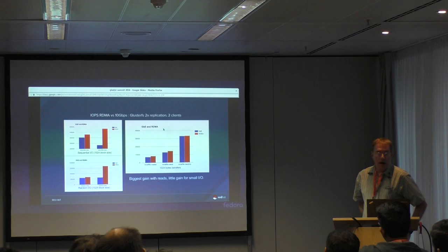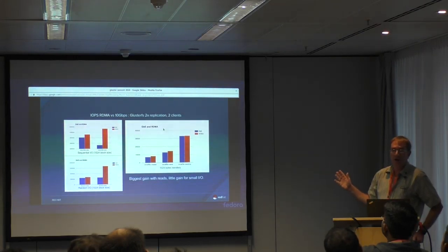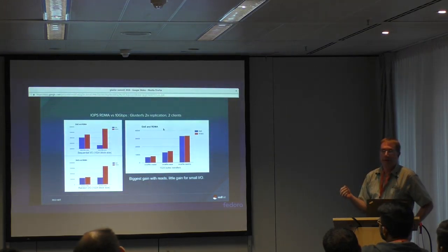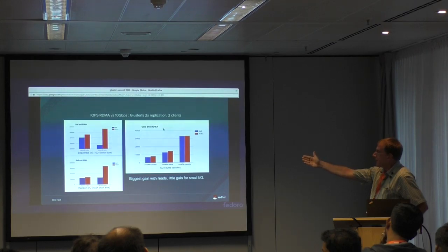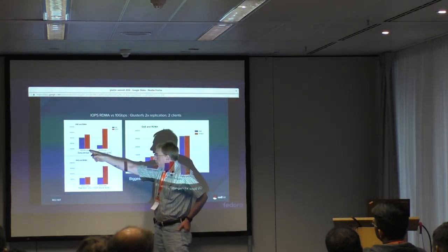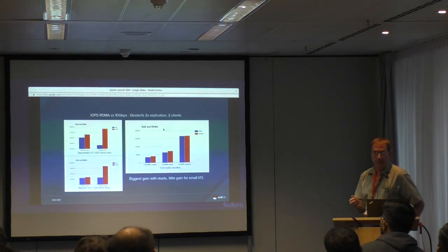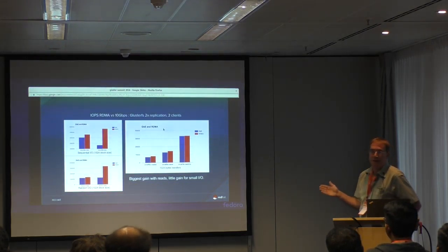Getting back to RDMA, we see the classic Gluster results here. On the left are large data transfers and on the right are small data transfers. Small data transfers do poorly in Gluster. On the left you have writes and reads — the reads benefited greatly from RDMA, the writes not so much. I was told by Rafi and others that was due to the replication overhead. On the right we have small transfers, and you can see RDMA did not help.